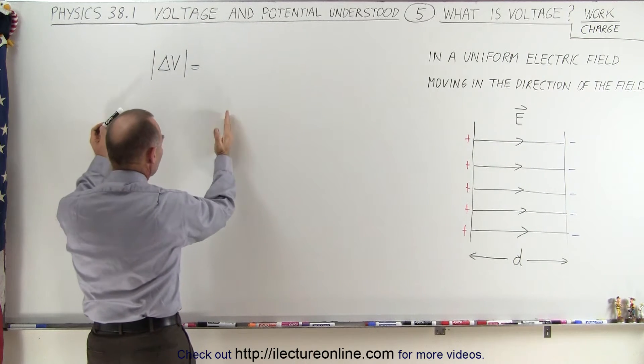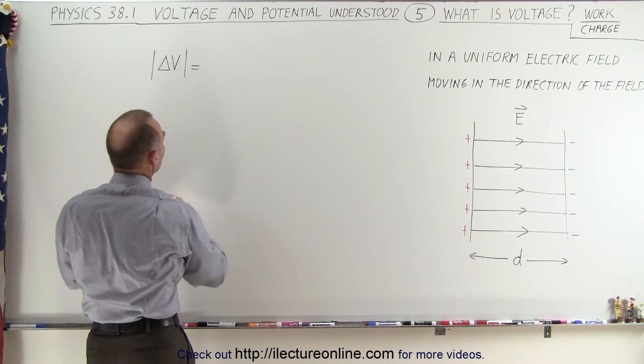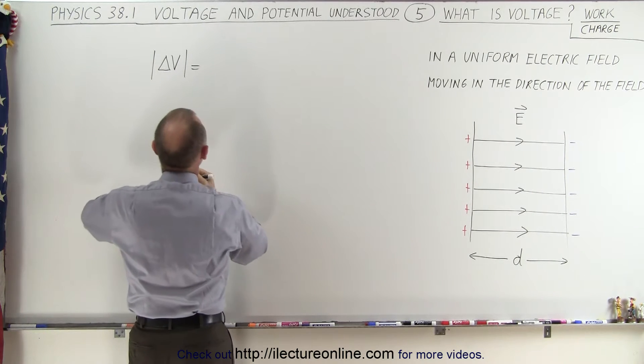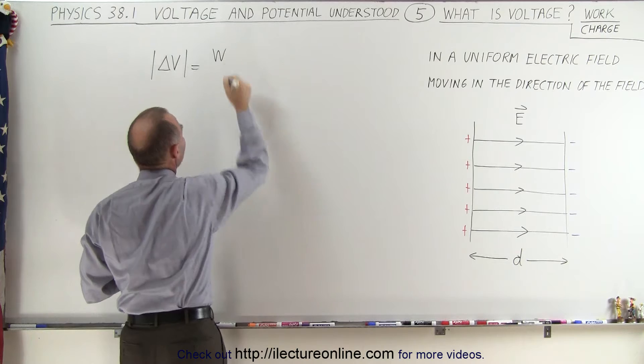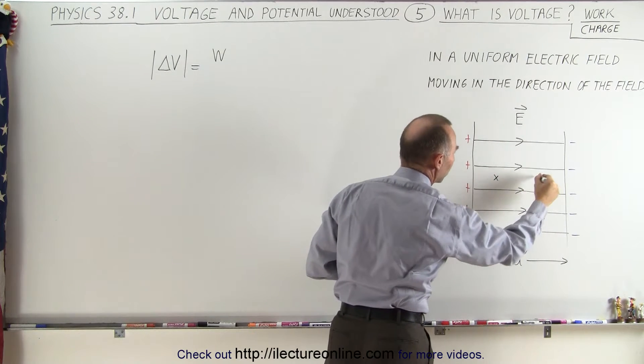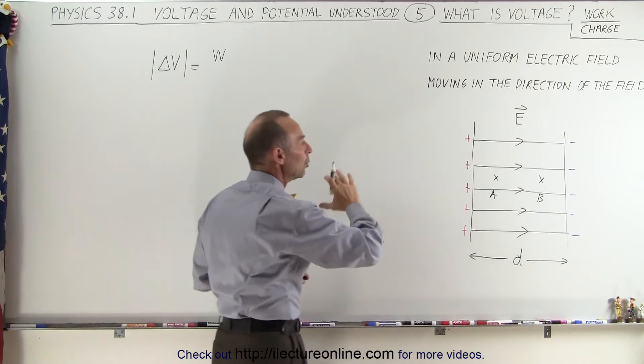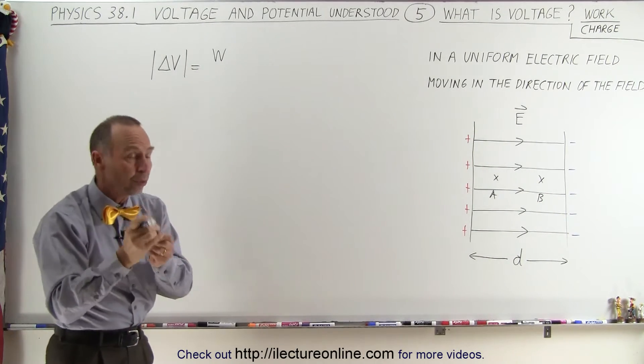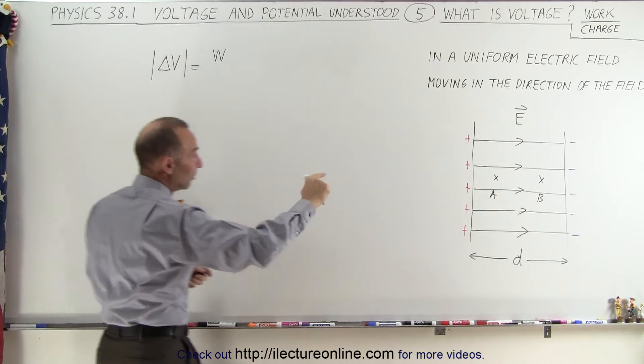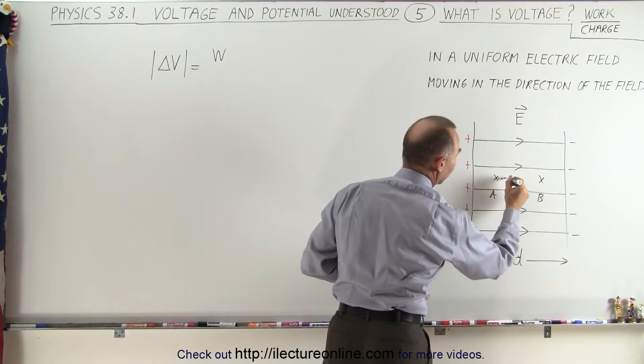The difference in the potential, or the difference in the voltage between those two points, is going to be equal to the work that it takes to move a charge, let's say from point A to point B. If this is point A and this is point B, then the work it takes to move a charge between those two points in the direction of the field, so parallel to the field, like this,